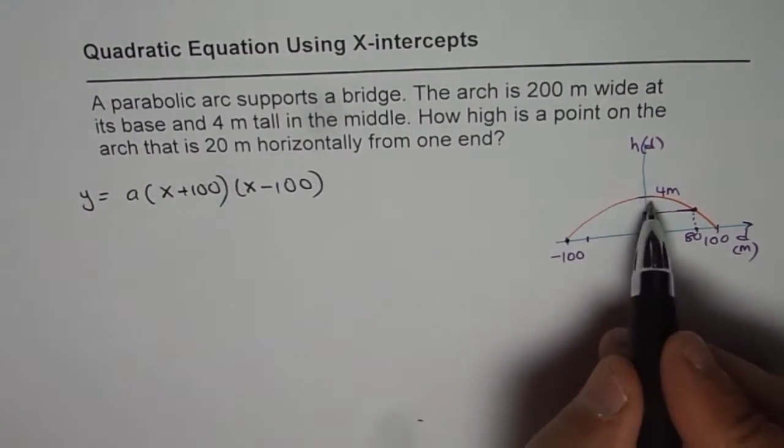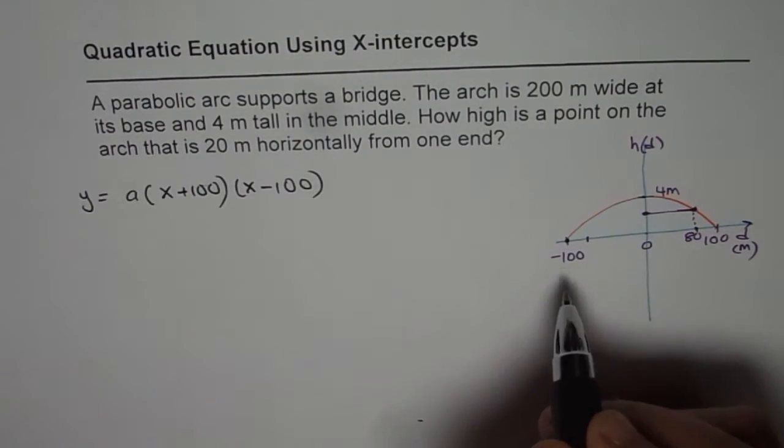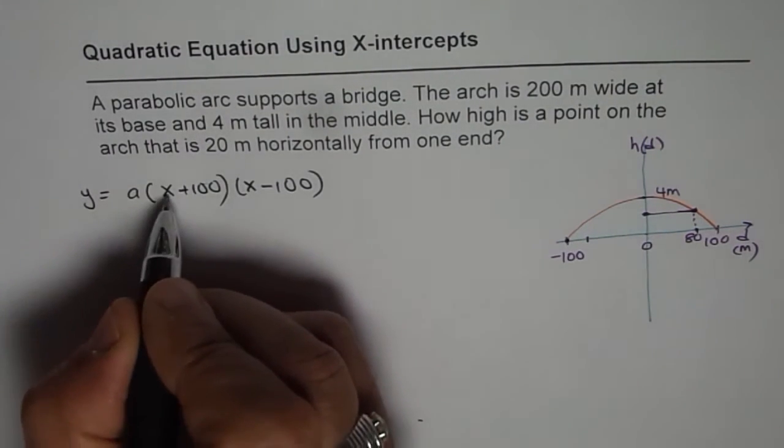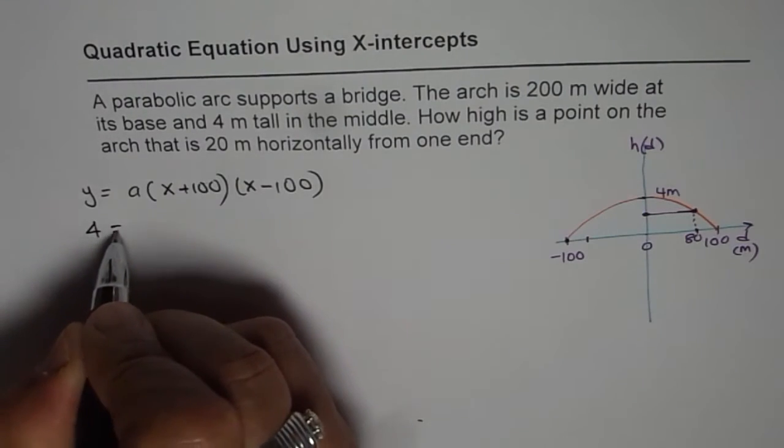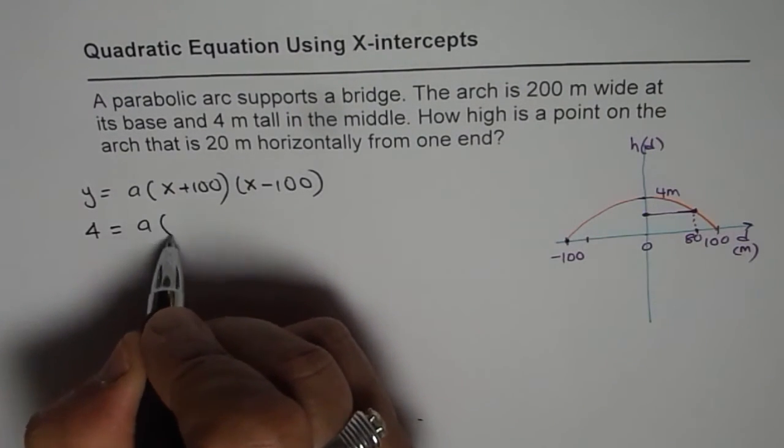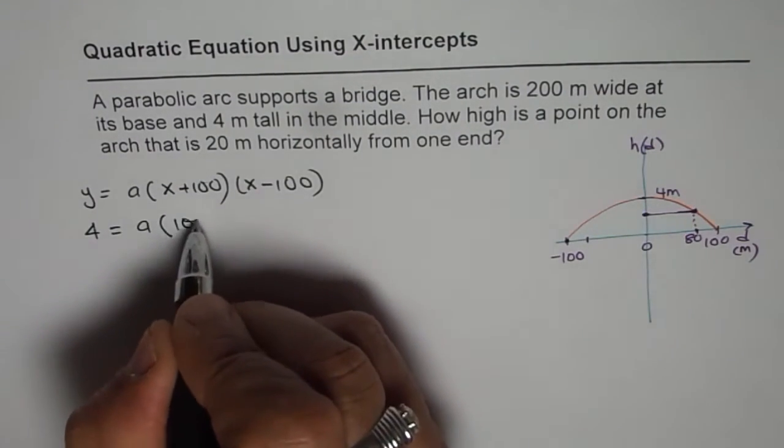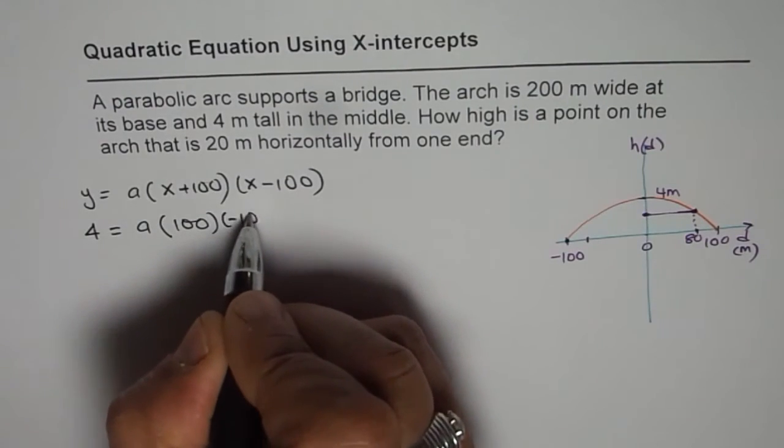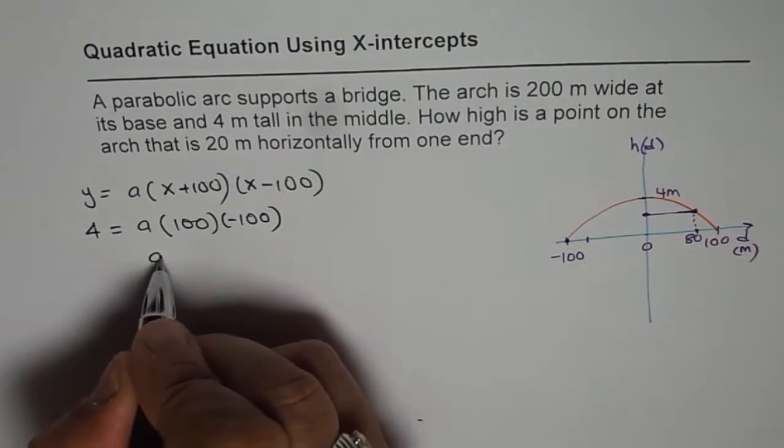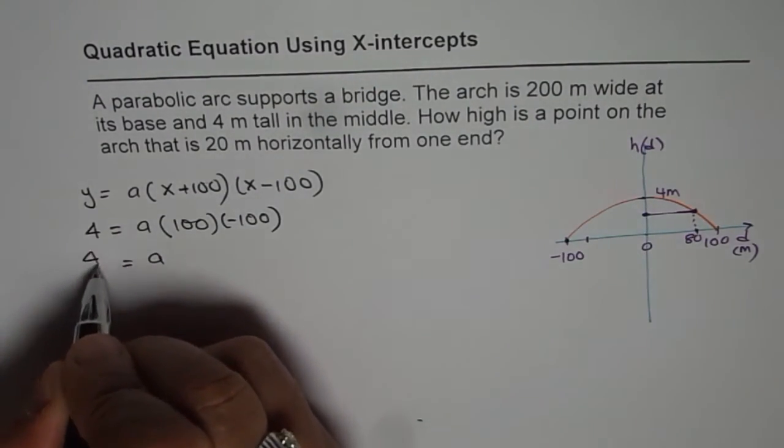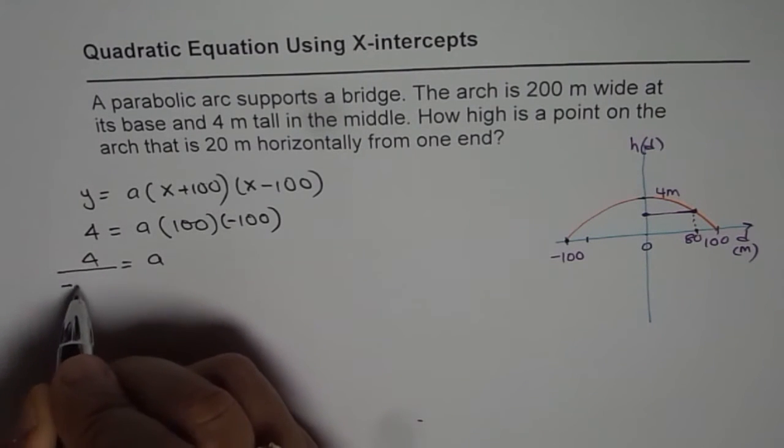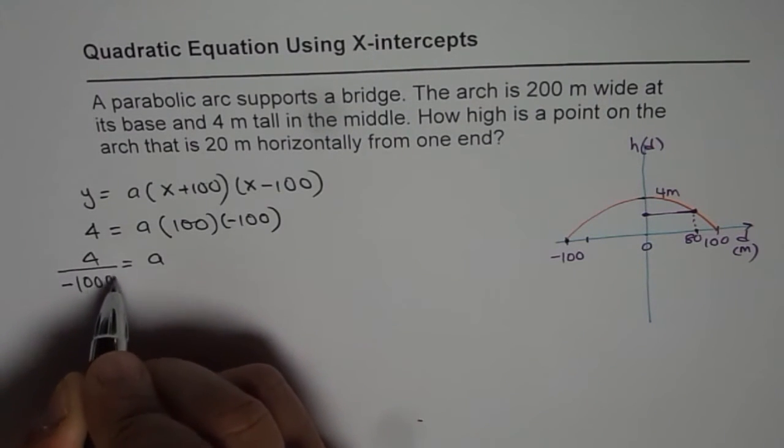Zero for x and 4 for y. So we get 4 equals a times, if I write 0 here, I get 100 times minus 100. So from here we can calculate a equals 4 over minus 10,000.